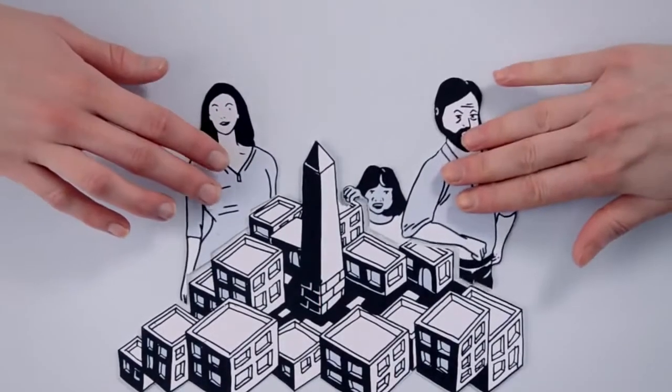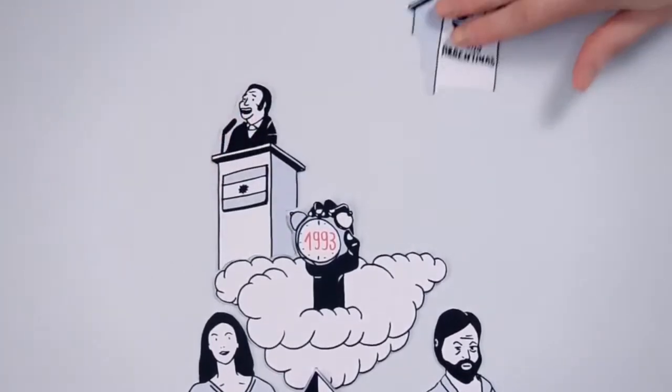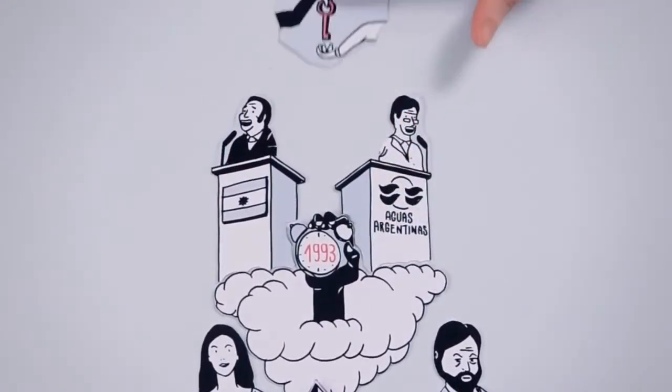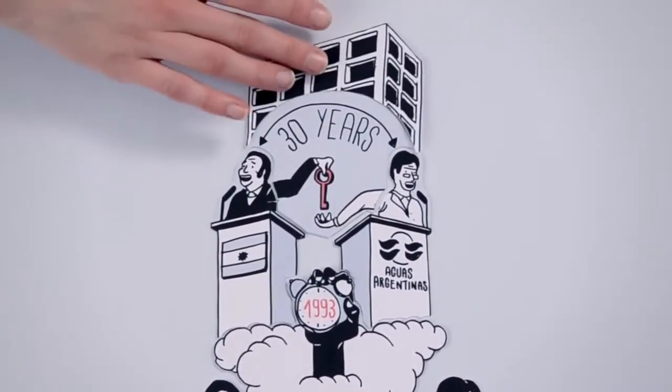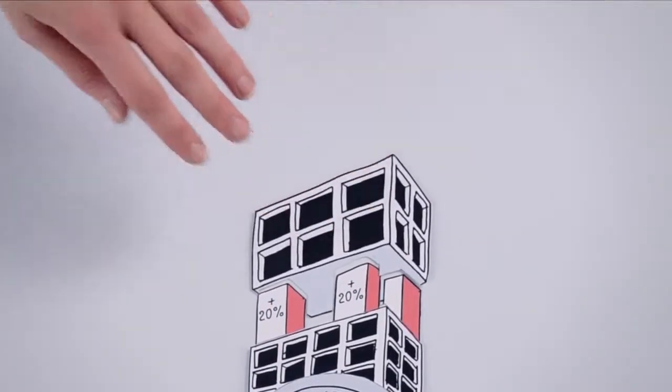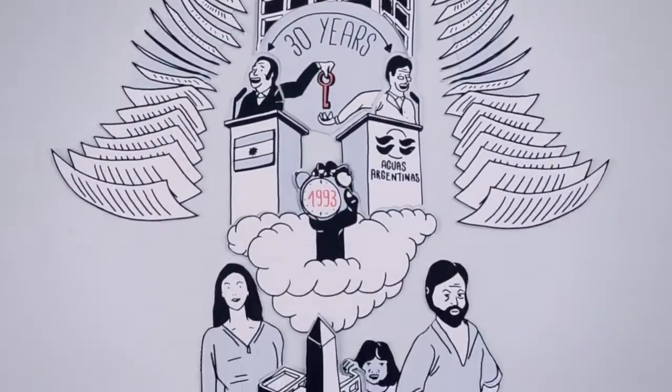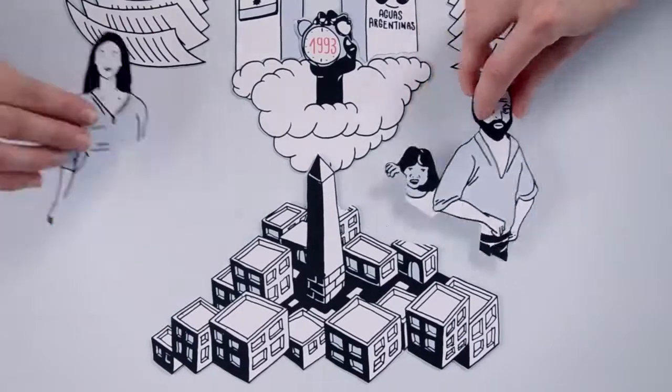Take Buenos Aires. In 1993, the government granted a 30-year concession to a subsidiary of French water company Suez. The private company's profits soared, even as it failed to comply with its contract. Over 10 years, urban residents saw their water bills increase by 88%.